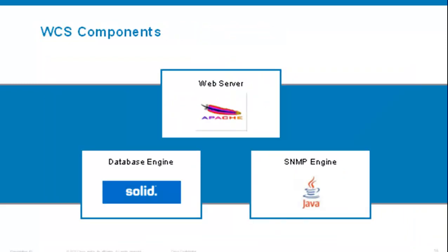Let's talk about the WCS components. There are three main components in WCS. The first, the main one, is your web server, which uses Apache Tomcat. You also have a database engine, which uses a Solid proprietary SQL database. And finally, for all SNMP engine-related operations, there is a Java module that talks with the web server.